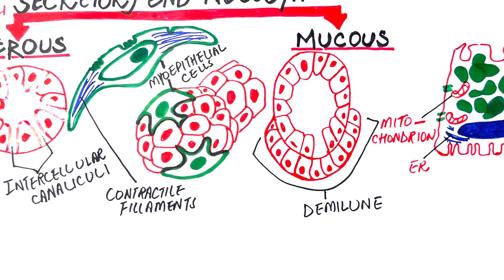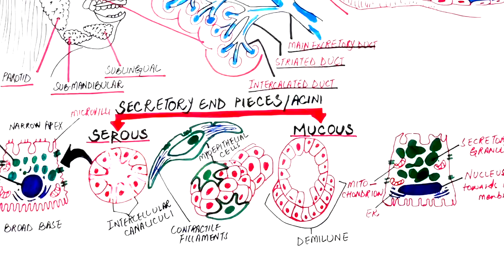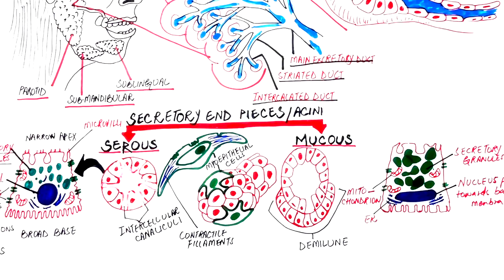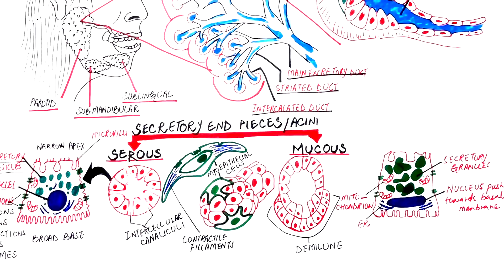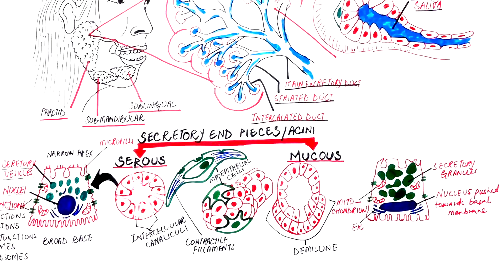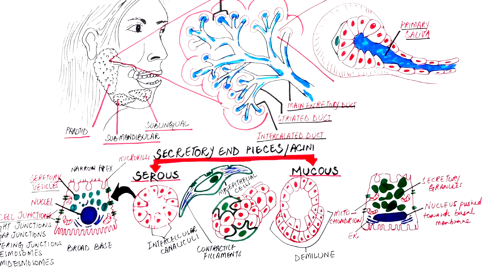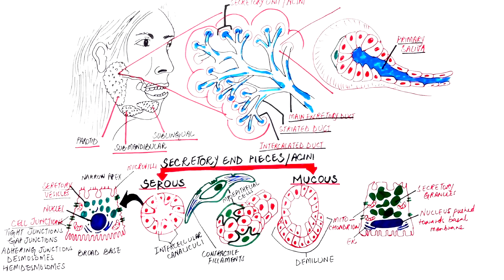The myoepithelial cells also help to expel the primary saliva from the end piece into the ductal system. This was an overview of the histology of the secretory end pieces of the serous and mucus acini. The primary saliva is initially produced and secreted here and is then transported to the oral cavity via a series of ducts, which we will discuss in our upcoming video. I hope this video helps.